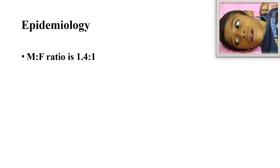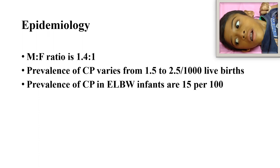Incidence of cerebral palsy is more in male children compared to females; the ratio of male to female is 1.4:1. Prevalence of CP varies from 1.5 to 2.5 per 1000 live births. When the weight of the newborn is less than 1 kg, the prevalence of CP increases drastically to 15 per 100.